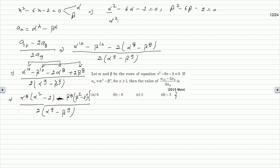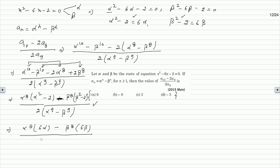From the root conditions, alpha squared minus 2 equals 6 alpha, and similarly beta squared minus 2 equals 6 beta. Substituting these values into the expression, we can write alpha to the power 8 times (alpha squared minus 2) as 6 alpha to the power 9, and similarly beta to the power 8 times (beta squared minus 2) as 6 beta to the power 9. The denominator remains twice of alpha to the power 9 minus beta to the power 9.